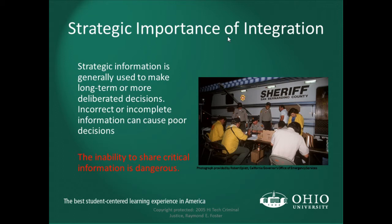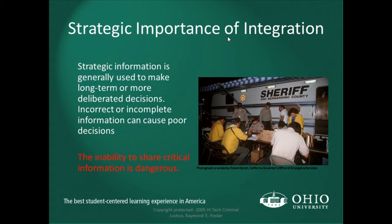Strategic information is generally used to make long-term or more deliberate decisions. Incorrect or incomplete information can again cause poor decisions. Crime does not follow jurisdictional boundaries. If you're not aware of something occurring in a neighboring jurisdiction, you might make long-term strategic decisions that aren't supported by that information. That's another way that a lack of integration or interoperability can be dangerous.